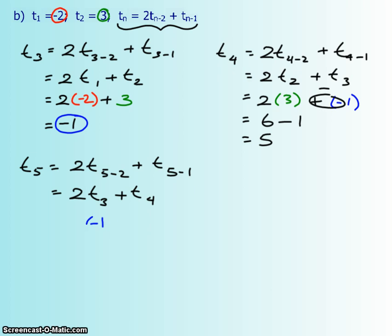and then plus your t₄, so let's do yellow again, and then we're going to get negative 2 plus 5, which is 3.